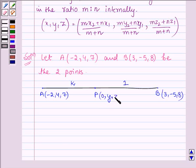Now again according to the section formula the coordinates of the point which divides the line segment AB are given by